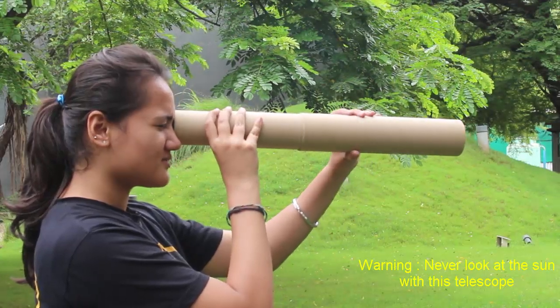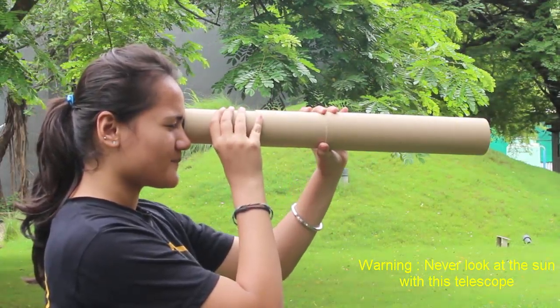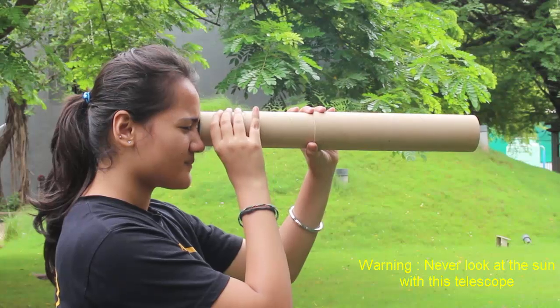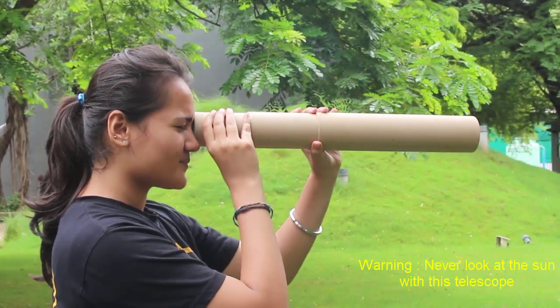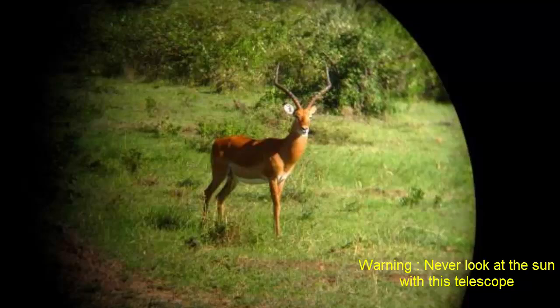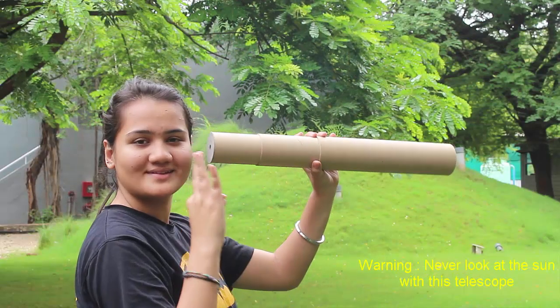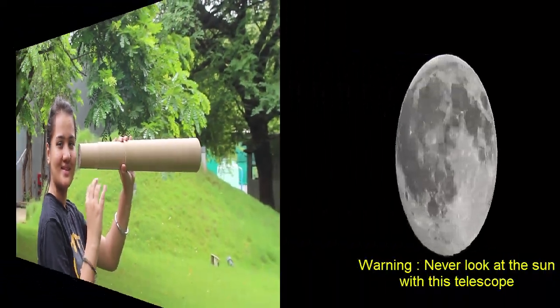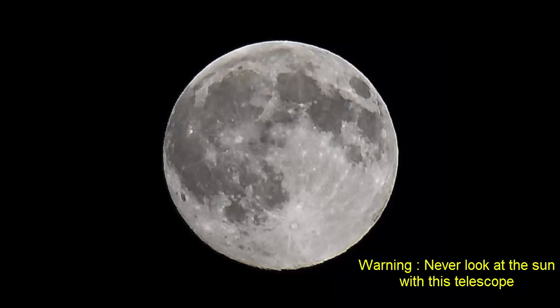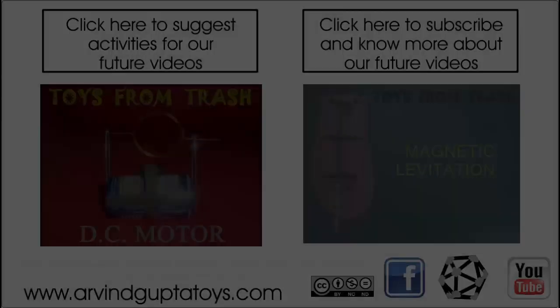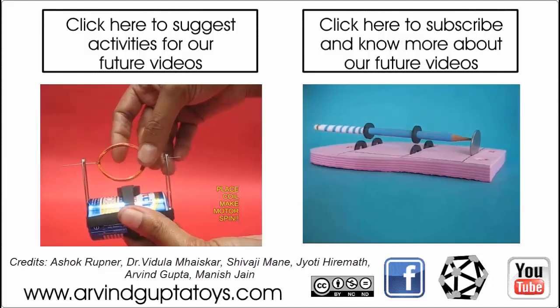Now point the big lens towards the object you wish to observe. Adjust the focal length by sliding the tubes. Soon you will see a clear image of your desired object. You can watch birds, you can watch wildlife or gaze at the moon with the simplest telescope.